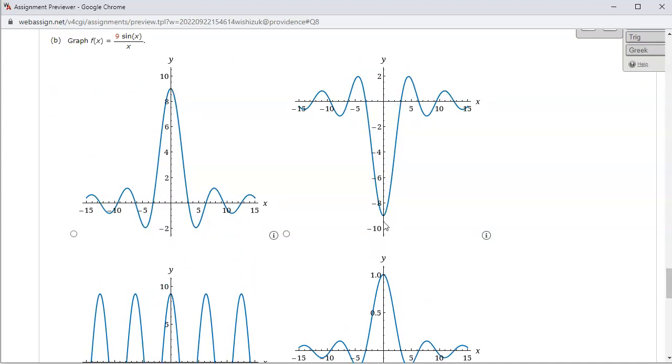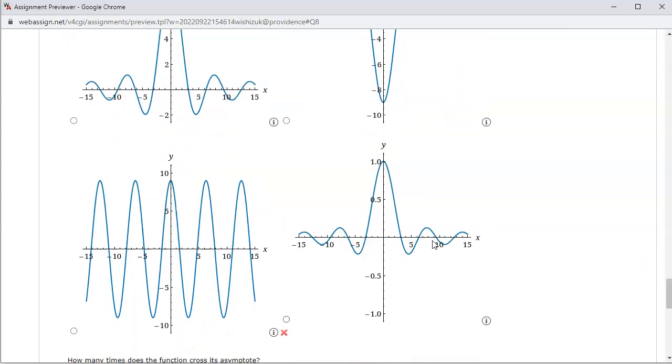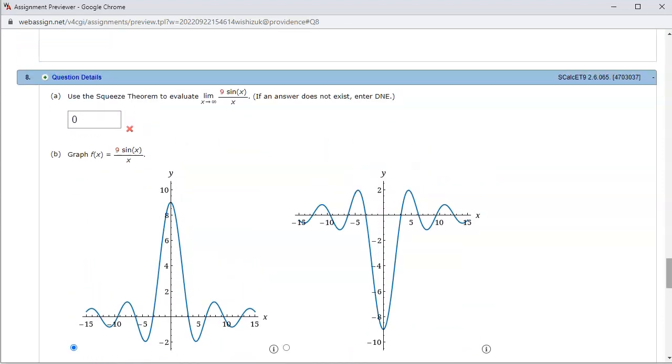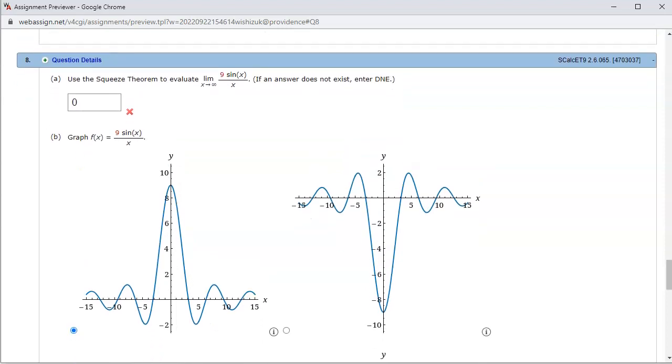And this one has actually negative 9, so this wouldn't be it. And then this guy is going to have a positive 1. So this is the correct picture. Let's check the answer.